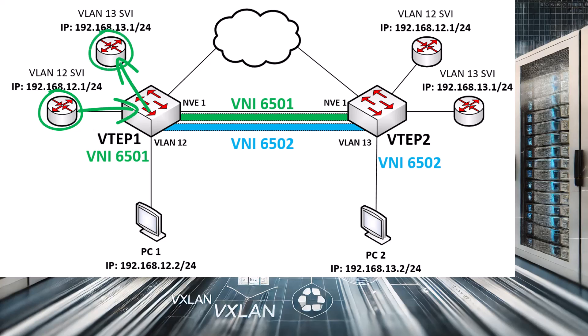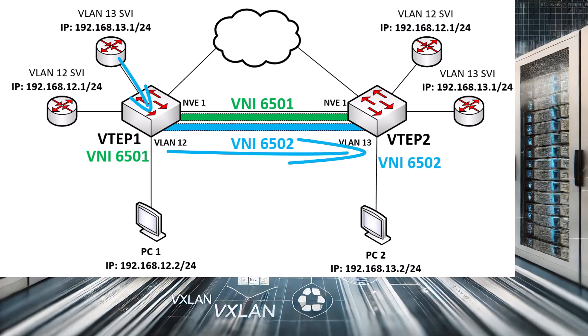The packet will then be placed on VNI 6502 and sent along its way. When it reaches the egress VTEP, which is VTEP2, only bridging will take place here. And that's fine, because we're already on VNI 6502. So, without any Layer 3 routing, the VTEP will forward the packet to PC2.